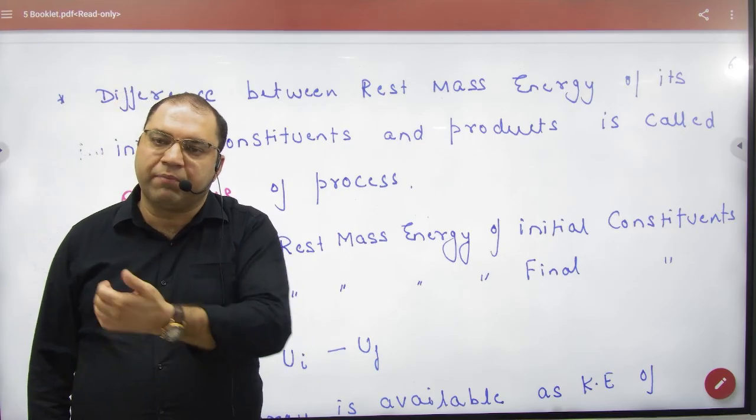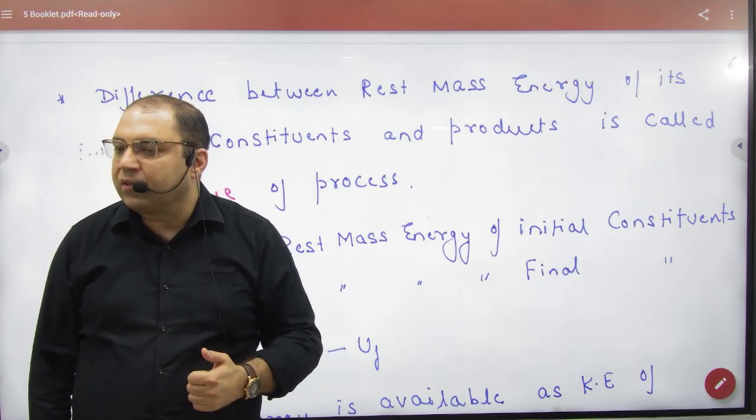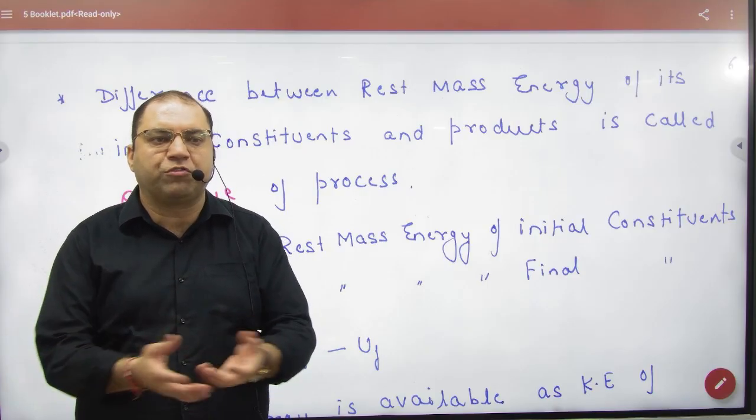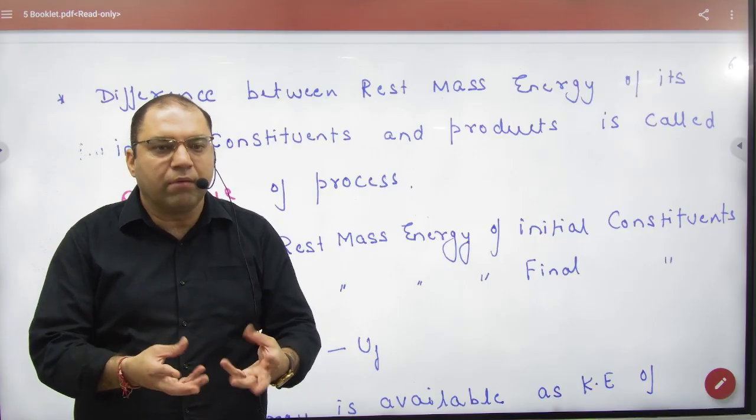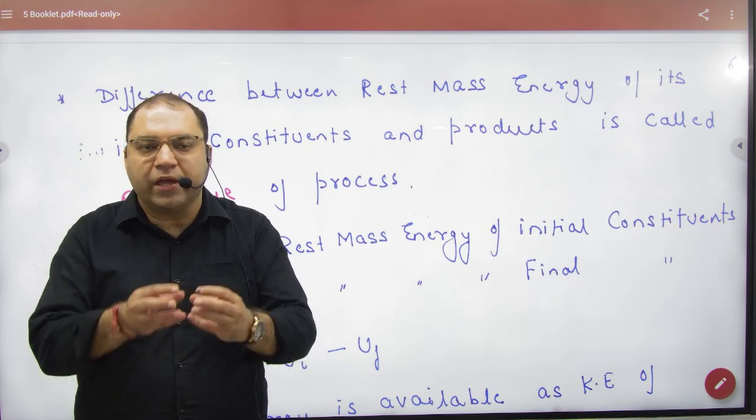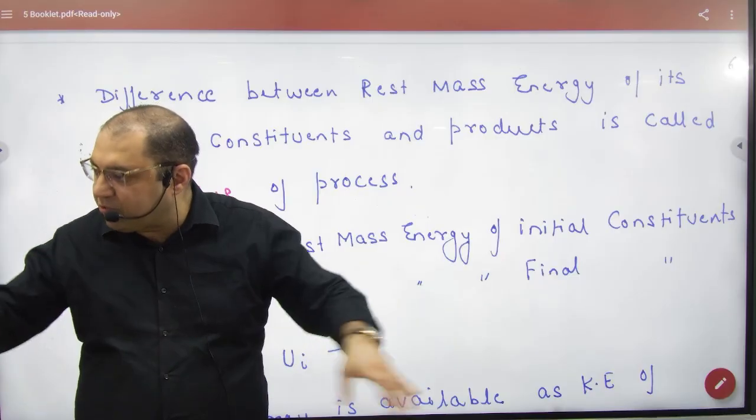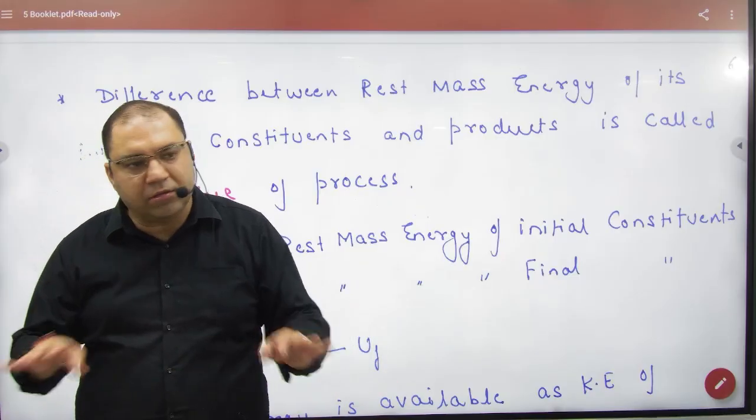When a large nucleus breaks into smaller nuclei, they don't just stay in place. When it splits, it's like a bomb explosion. The fragments move in opposite directions - M1V1, M2V2, following the principle of momentum conservation.